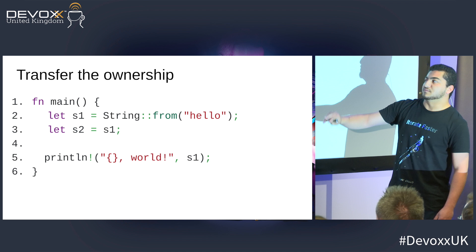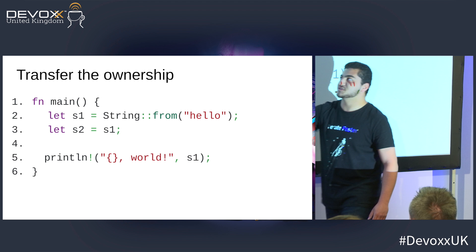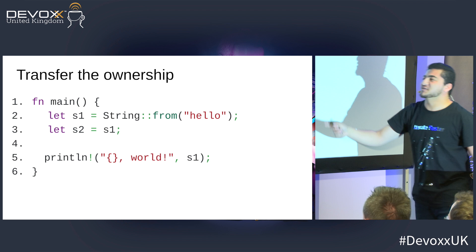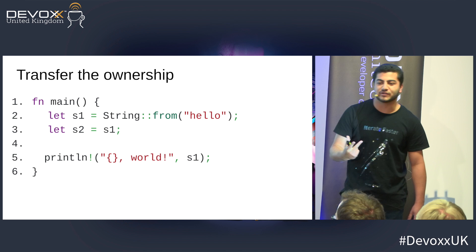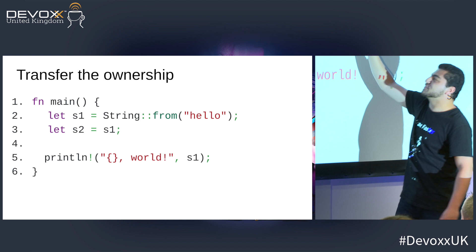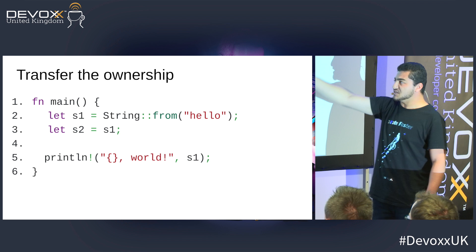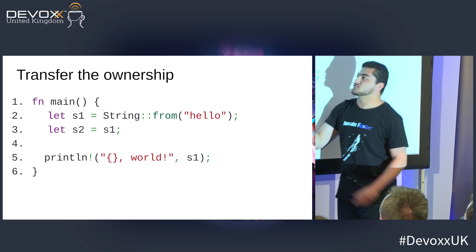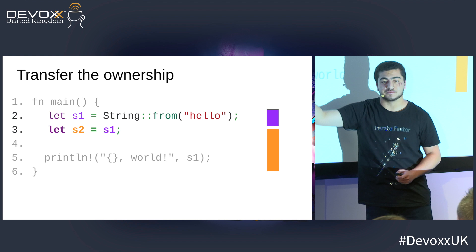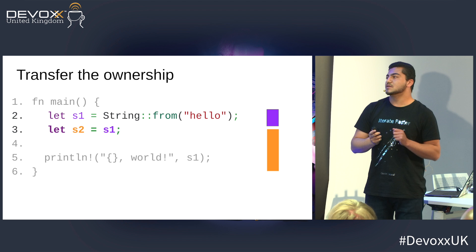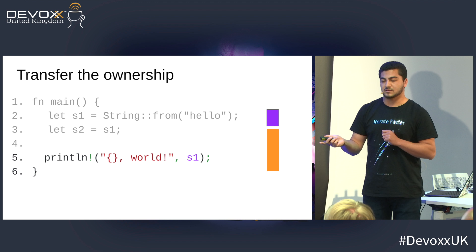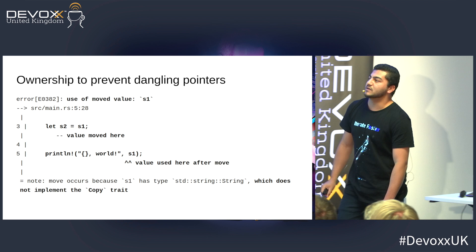To transfer ownership, let's create a string. This is how we create a function in Rust — using 'fn'. You create S1, which is an immutable string, and you transfer the ownership of S1 to S2. If you try to use S1 again, the compiler creates an error.